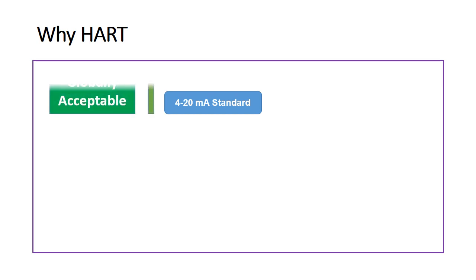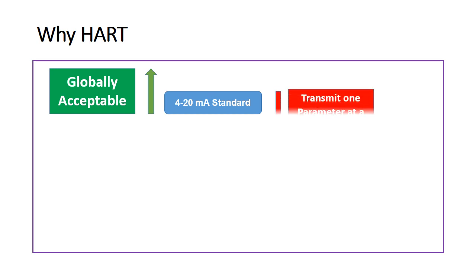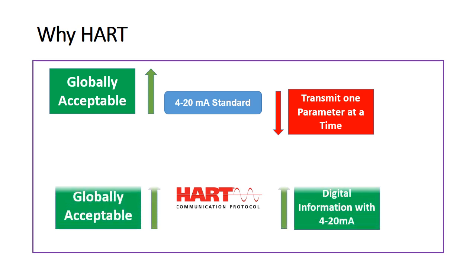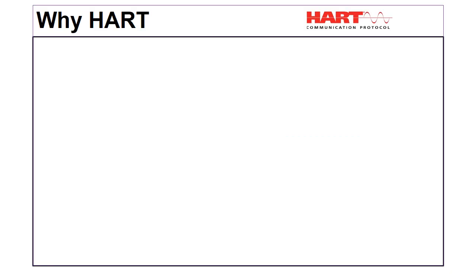Why use HART? As we are all aware, the 4 to 20 milliampere standard is worldwide accepted for analog signals, but there is a major drawback: the 4 to 20 milliampere standard can transmit only one parameter at a time on analog wiring. HART is the answer to this drawback, as it can transmit analog signal as well as digital information at the same time.